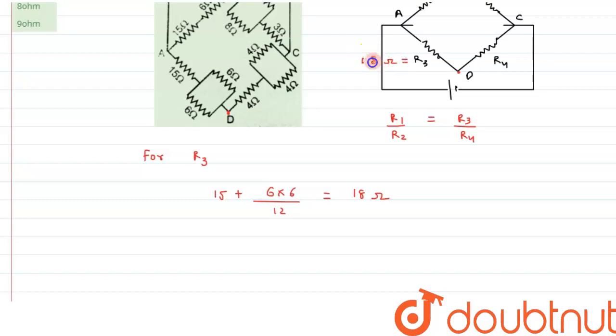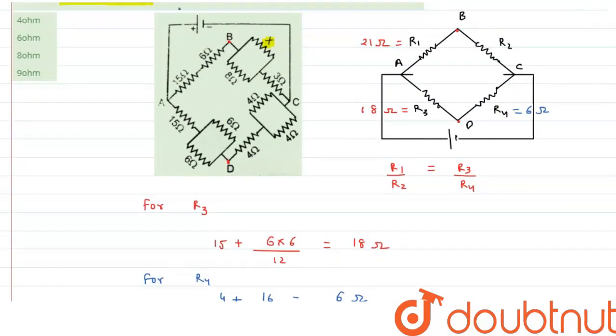Now it's time to calculate R4. For R4 we can see 4 is in series with these two parallel, that is 4 plus 16 by 8, that comes out to be 6 ohm. So the value of R4 is coming out to be 6 ohm.